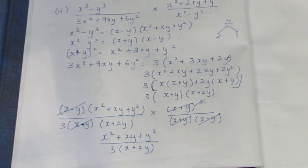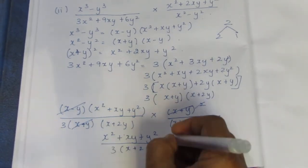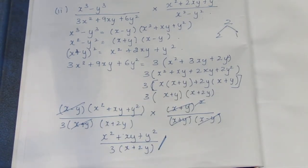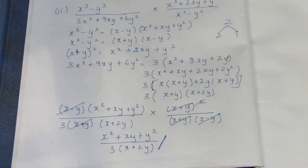So this is your final answer. Using factorization formulas, the answer is (x square plus xy plus y square) by 3(x plus 2y). Thank you.